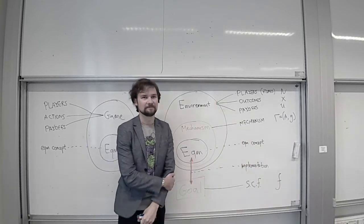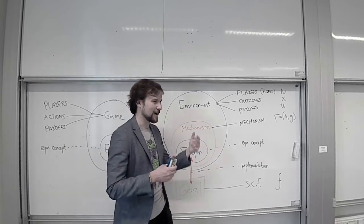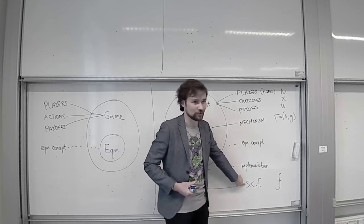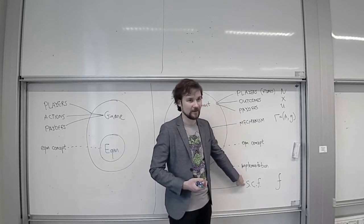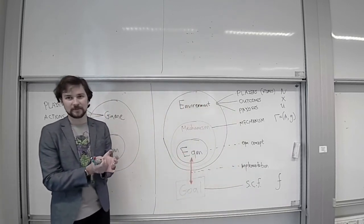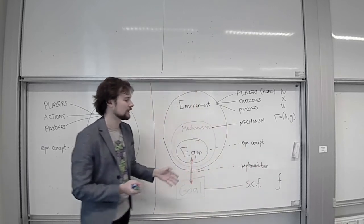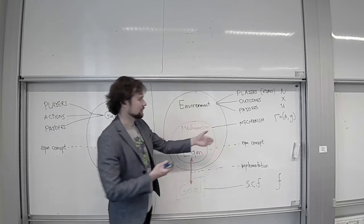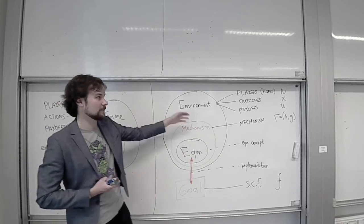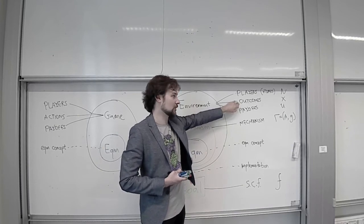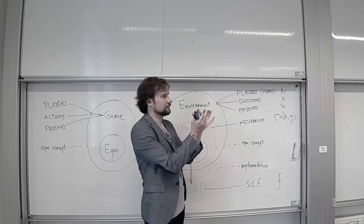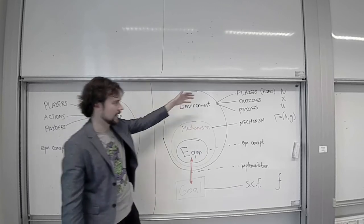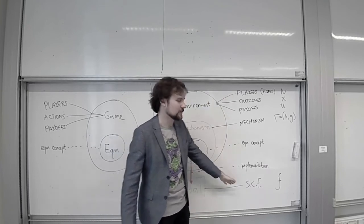Would that mechanism be efficient? It depends on how you frame the problem. If the outcome is whoever gets on the boat and the social choice function is we want the strongest person on the boat, then the mechanism is efficient. But if we reframe outcomes as whoever gets to stay alive, then there are restrictions on possible outcomes — we cannot directly choose the outcome but choose an action that affects it — and in that more complicated formulation the mechanism will not be efficient.